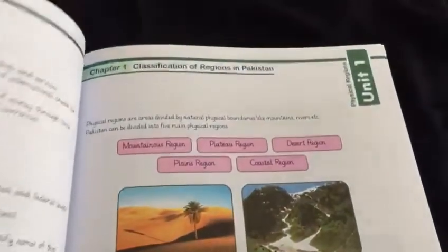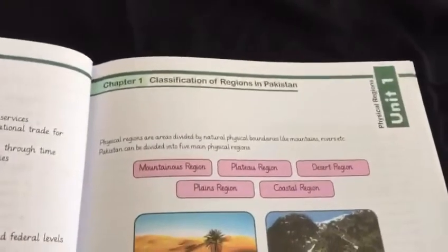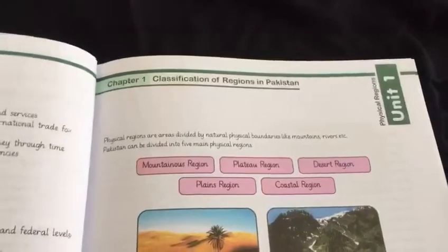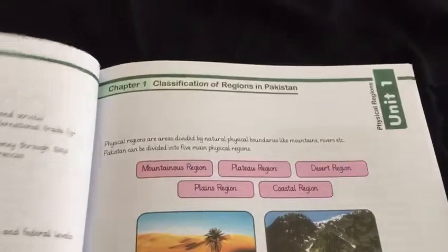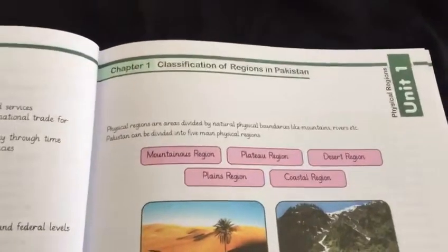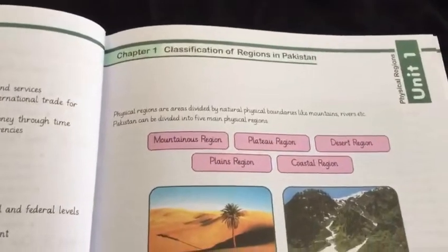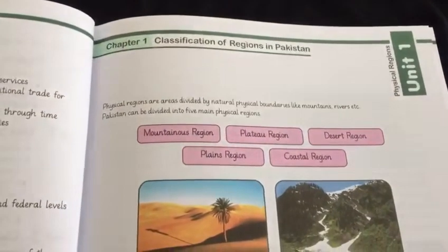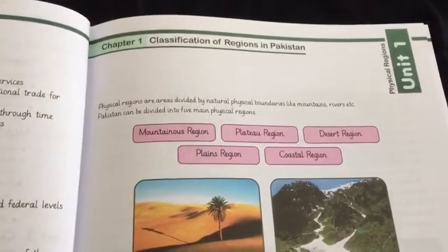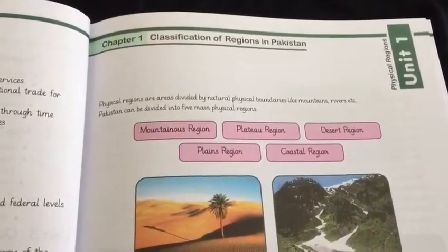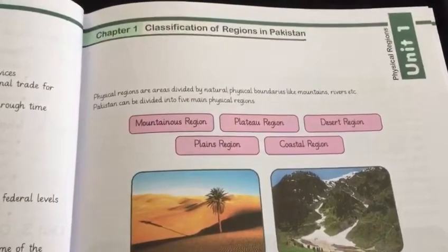From today we will be starting Chapter 1 of Unit 1. Turn to your page number 11 of your textbooks. The name of the chapter is Classification of Regions in Pakistan.